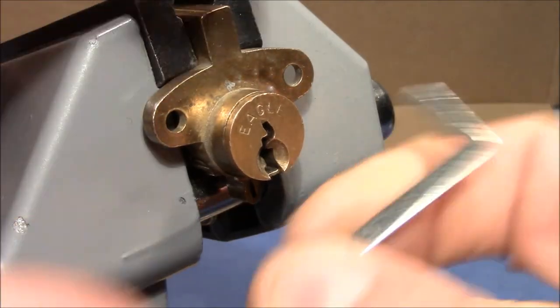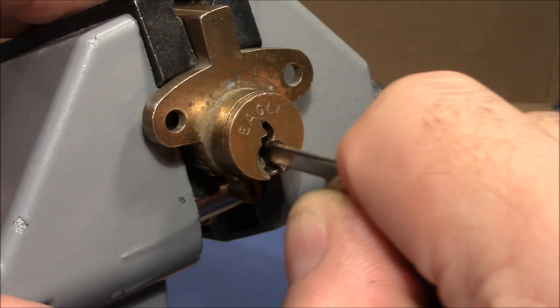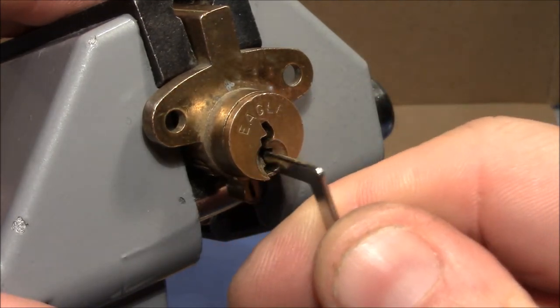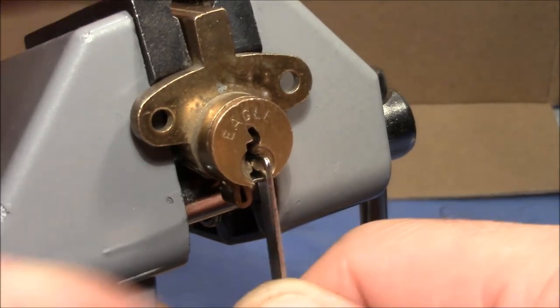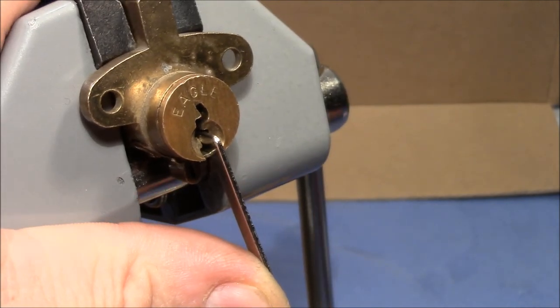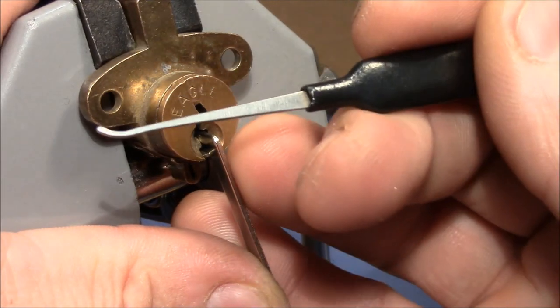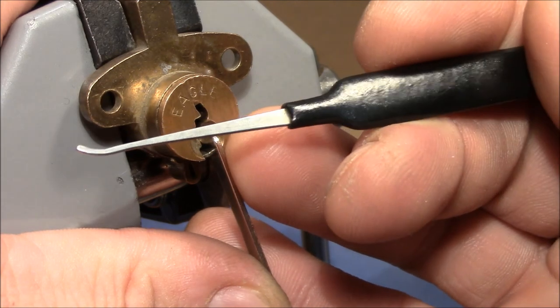For tensioning, I use a set tension bar that's meant to be used on dimple locks, but it fits very nicely here at the end of this keyway. For picking the pins, I use this Sparrows hook which is very narrow.